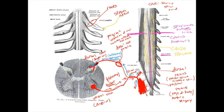Up at the top, after we have roots, we have little rootlets. Damaging one rootlet probably won't cause much damage, but damaging an entire root or an entire spinal nerve is going to cause much more significant problems.